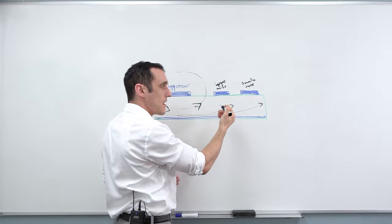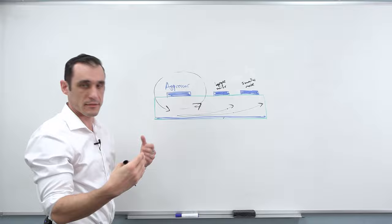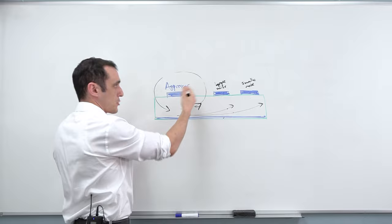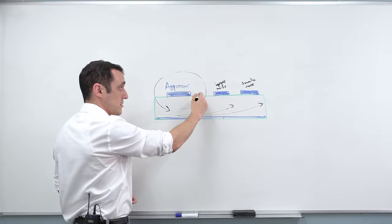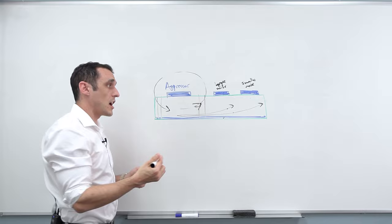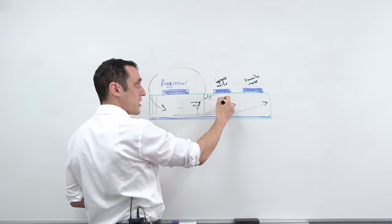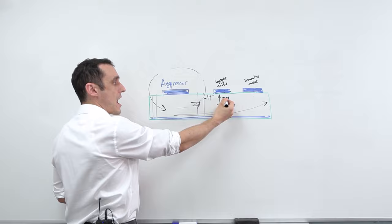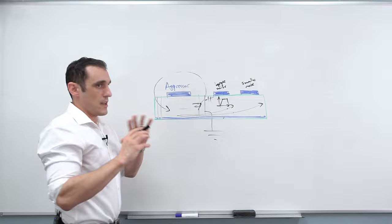If you route an aggressor right next to the differential pair, you might have excessive crosstalk and no guarantee it will be perfectly canceled. The remedy here is to just move the aggressor further away. Sometimes guidelines suggest running ground vias right next to the aggressor to shield it — and yes, it does block the electric field and causes it to terminate at the ground vias. However, it can also modify the impedance of one trace by creating parasitic capacitance near the via. So the best solution is simply to take the aggressor and move it a little bit further away.